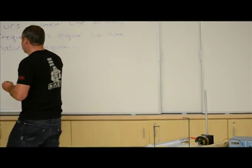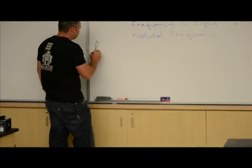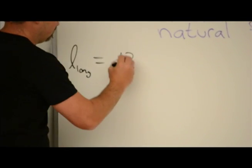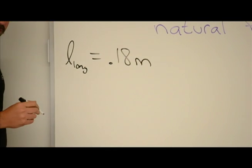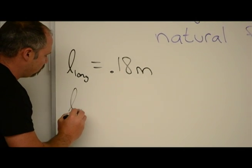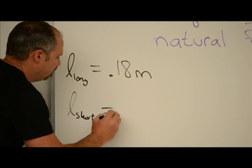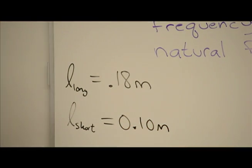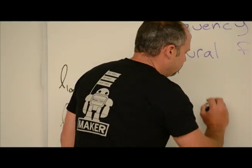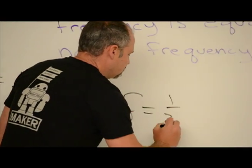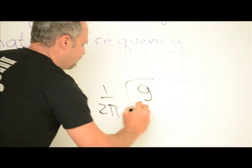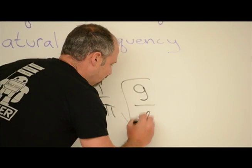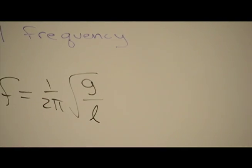So let's write that down. The length of the long string we had at 18 centimeters or 0.18 meters. The length of the short string, 0.10 meters, so 10 centimeters. Now, the frequency for a pendulum is this formula: 1 over 2π, square root of acceleration of gravity, so it does depend on what planet you're on, divided by the length of the pendulum.